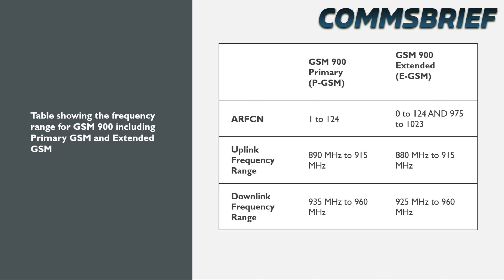If you look at the ARFCNs for the primary band, they range from 1 to 124. Each number refers to a combination of uplink and downlink frequency channels. In the extended GSM band, the ARFCN starts from 0 instead of 1, so 0 to 124, and then 975 to 1023.